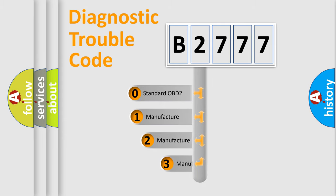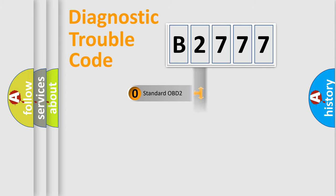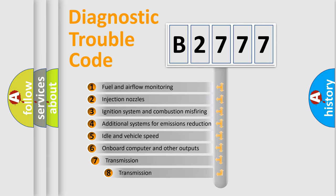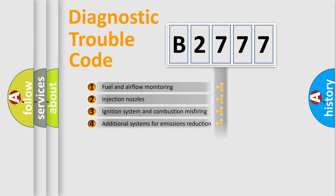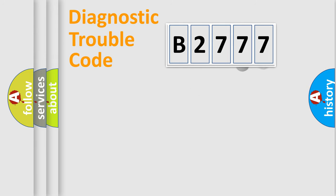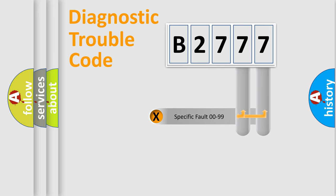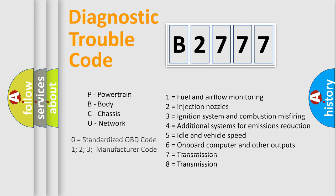This distribution is defined in the first character of the code. If the second character is expressed as zero, it is a standardized error. In the case of numbers 1, 2, or 3, it is a more specific car-specific error. The third character specifies a subset of errors, and the last two characters define the specific fault of the group. Note that this division is valid only when the second character is zero.